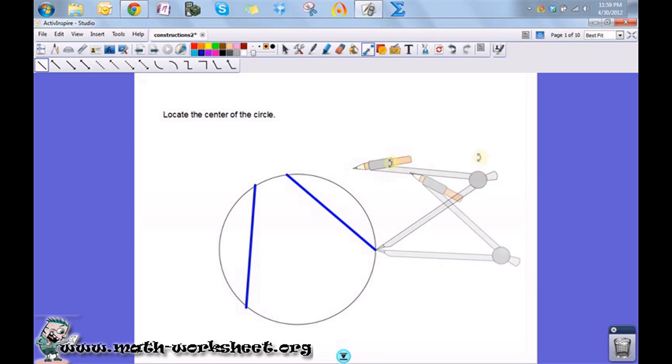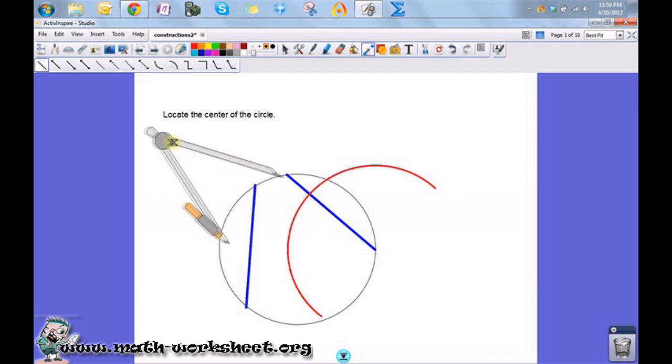Okay, now you want to draw a big sweeping arc. Okay, now leave your compass at the same setting and do a big sweeping arc at the other point.